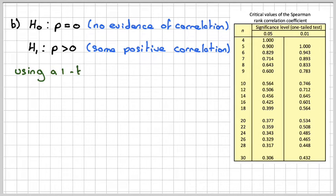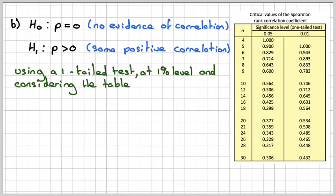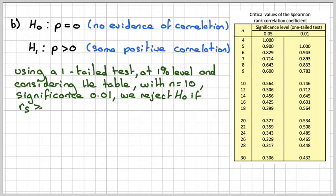Using a one-tailed test at the 1% level, so we're going to use this column, and n equals 10. We will reject H0 if rs, the Spearman rank correlation coefficient, is greater than this value here, 0.746.